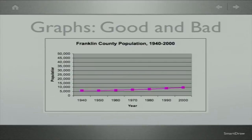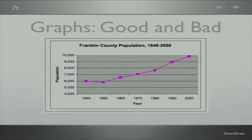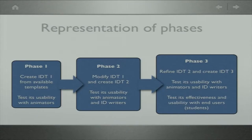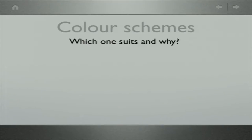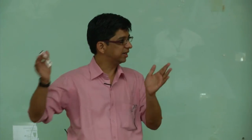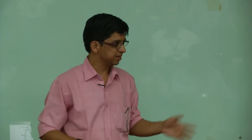Similarly, in graphs this is another mistake — a graph showing from 1940 to 2000. The mistake is the range. If you just zoom it for the area which is required, it is more clear. Representation of phases is a very common thing people do — showing the transformation happening from left to right, phase 1, phase 2, phase 3 with arrows in between.